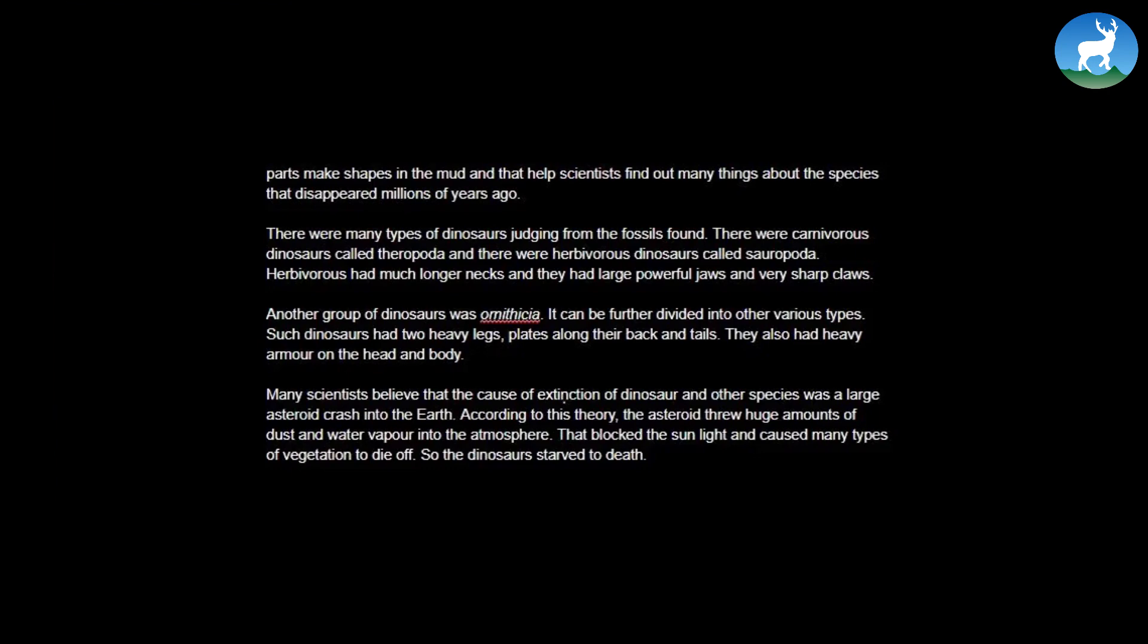There were many types of dinosaurs judging from the fossils found. There were carnivorous dinosaurs called Theropoda, and there were herbivorous dinosaurs called Sauropoda. Herbivorous had much longer necks, and they had large powerful jaws and very sharp claws. Another group of dinosaurs was Ornithischia. It can be further classified or further divided into various types. Such dinosaurs had two heavy legs, plates along their backs and tails. They also had heavy armor on the head and body.